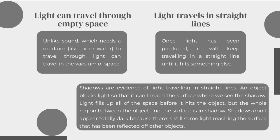Light can travel through empty space. Unlike sound, which needs a medium like air or water to travel through, light can travel in the vacuum of space. Light travels in straight lines. Once light has been produced, it will keep traveling in a straight line until it hits something else. Shadows are evidence of light traveling in straight lines. An object blocks light so that it can't reach the surface where we see the shadow. Shadows don't appear totally dark because there's still some light reaching the surface that has been reflected off other objects.